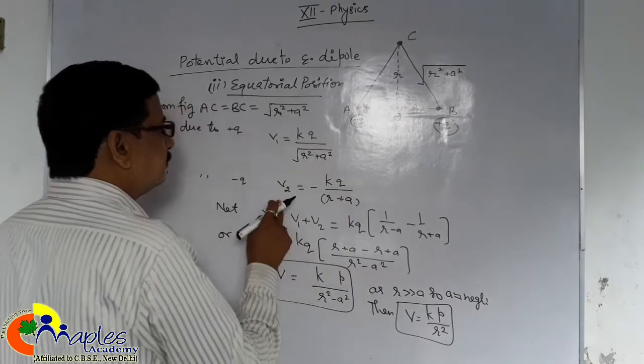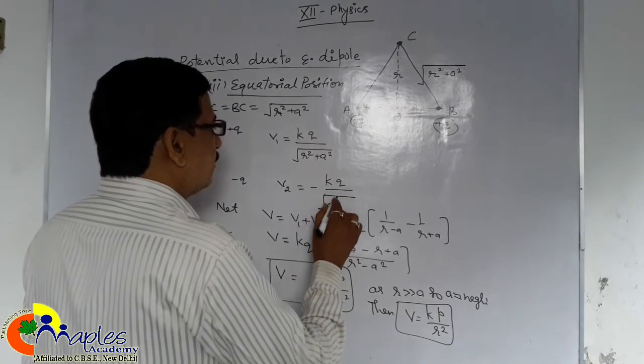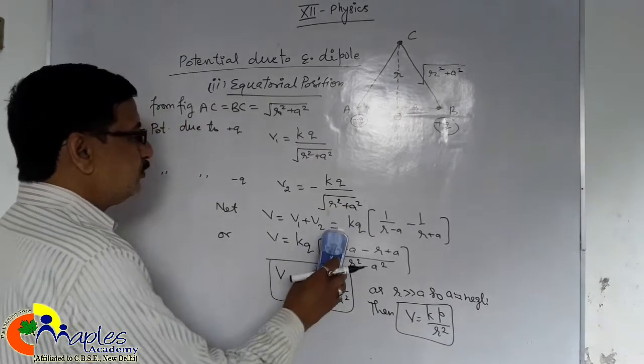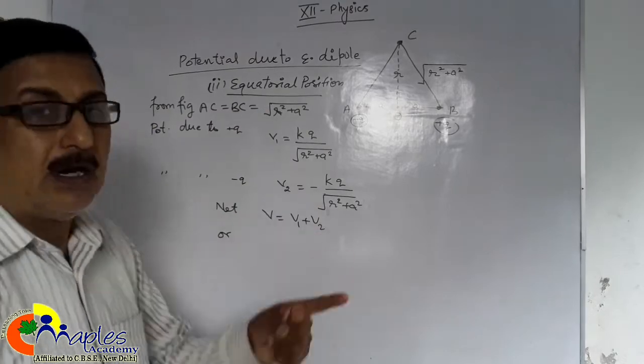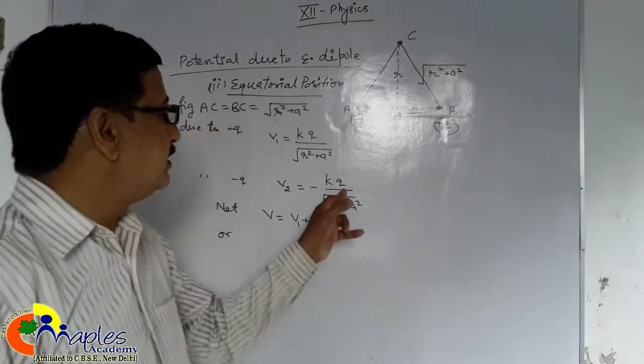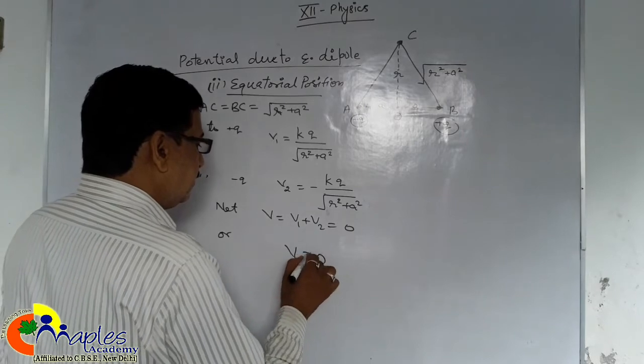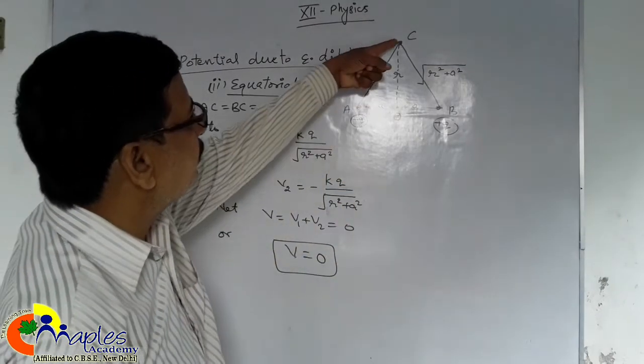And potential due to plus Q and due to minus Q. V1, V2, when we add both are equal in magnitude and sign opposite. So net will be zero.